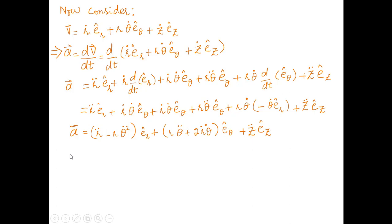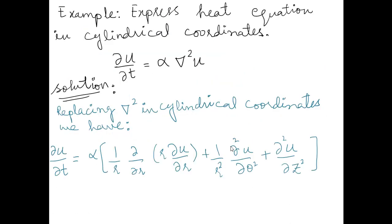The last example is to express the heat equation in cylindrical polar coordinates. The heat equation is ∂u/∂t = α ∇²u. Since we know the Laplacian expression in cylindrical polar coordinates, we replace ∇² with its cylindrical form to convert the full heat equation into cylindrical polar coordinates.